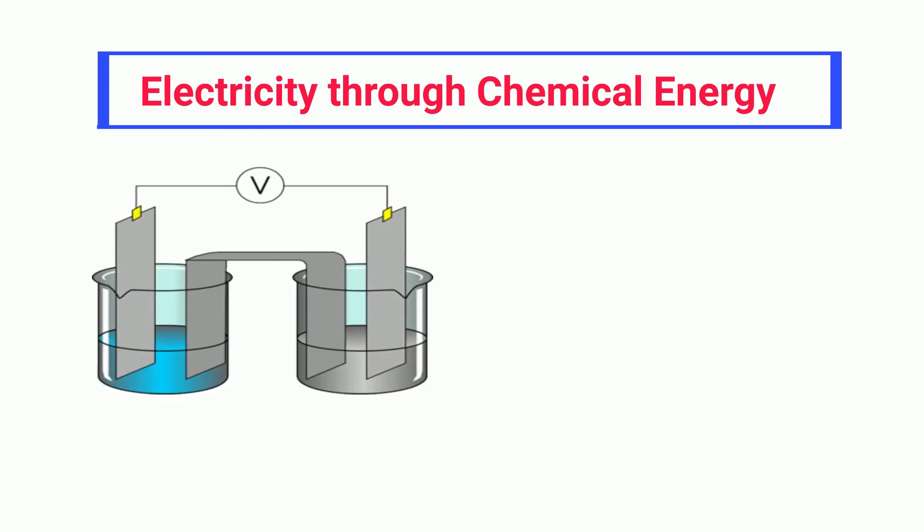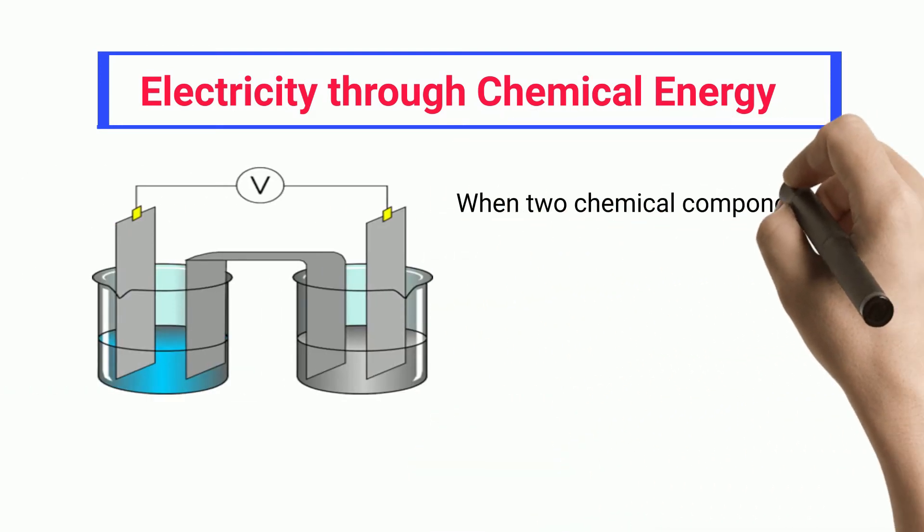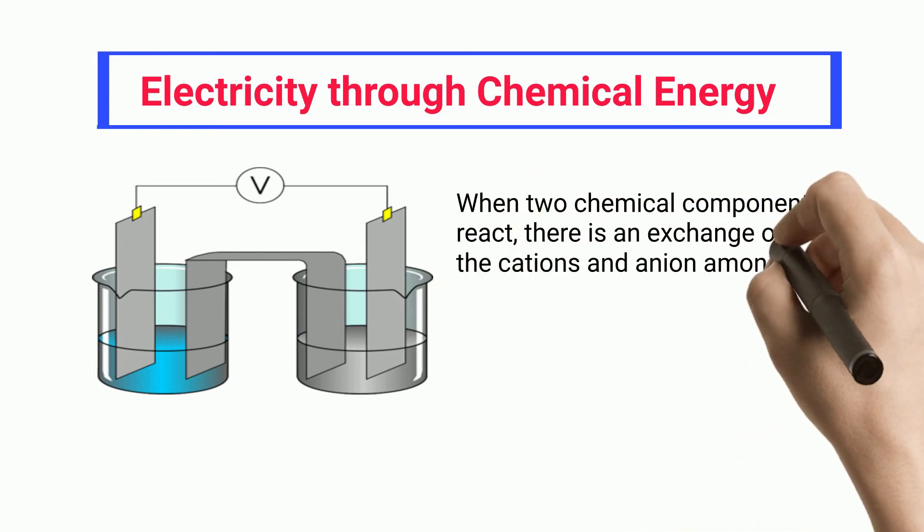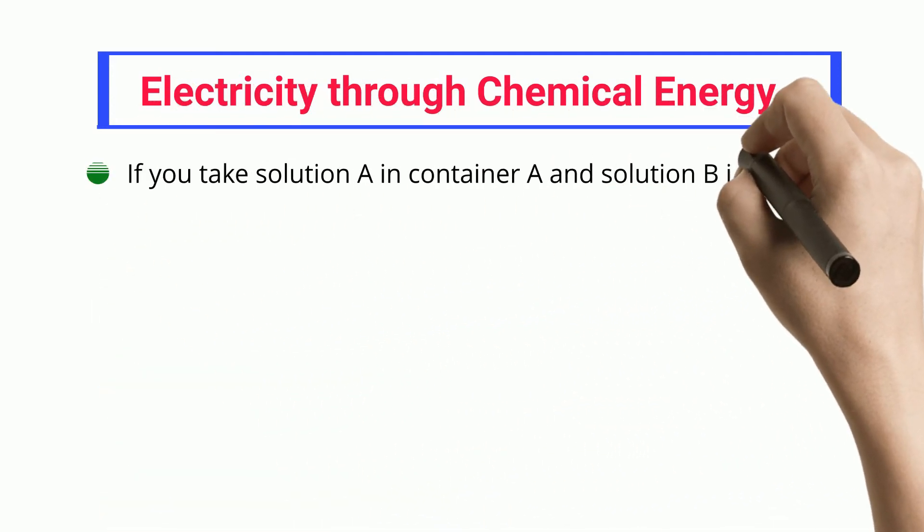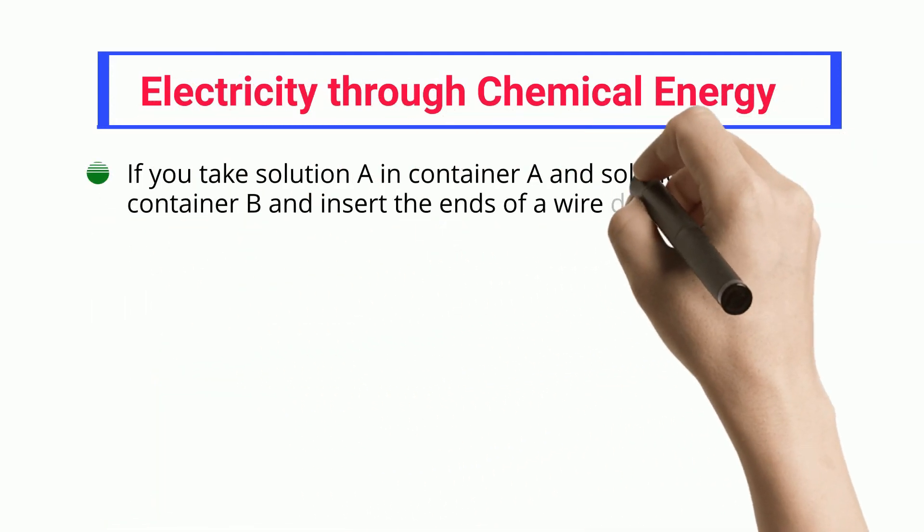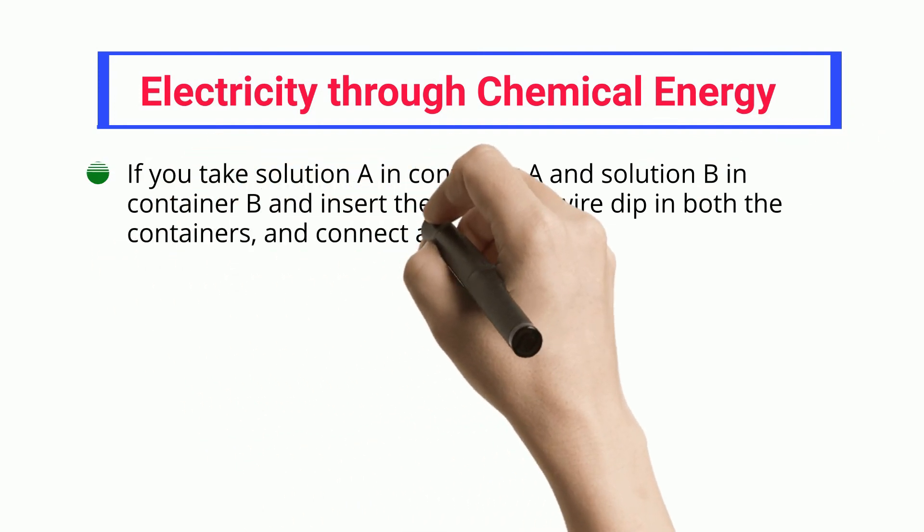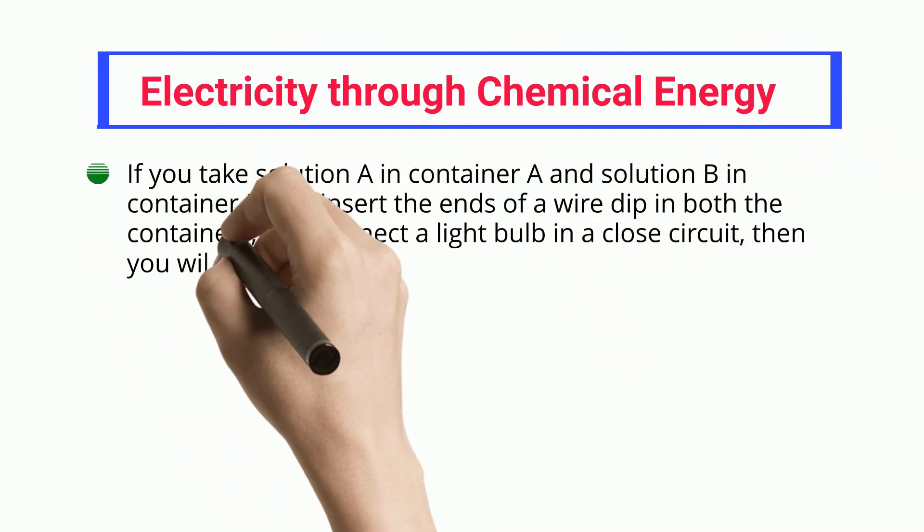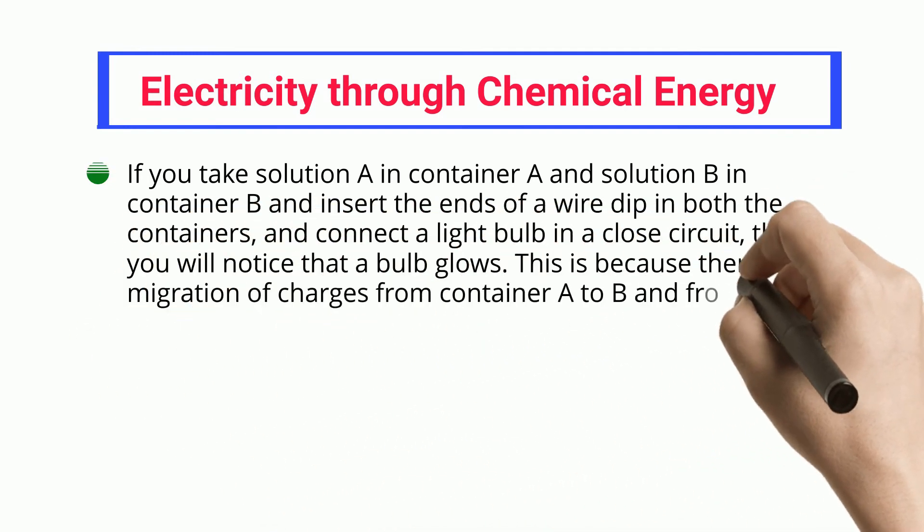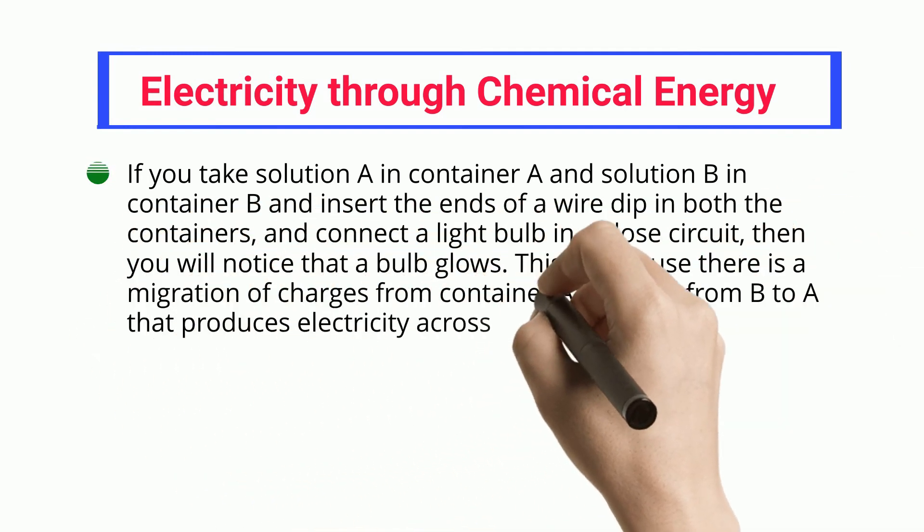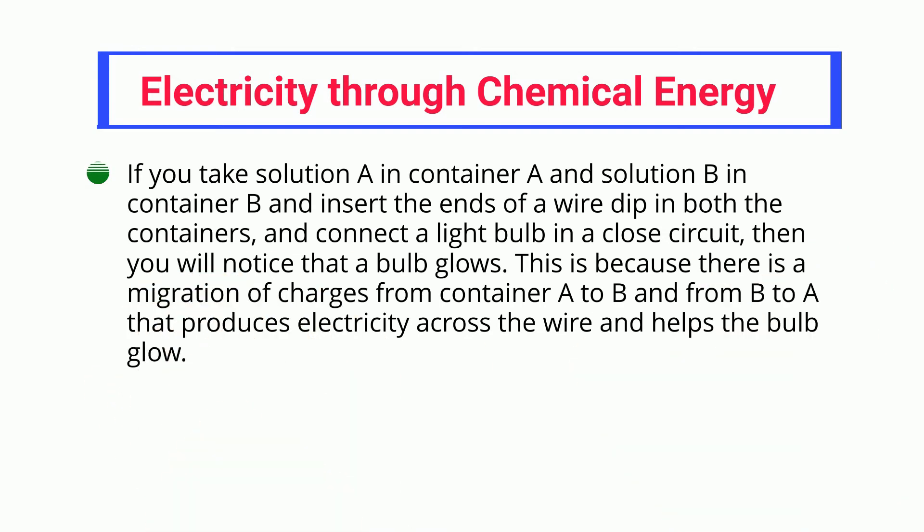Electricity Through Chemical Energy. When two chemical components react, there is an exchange of the cations and anions among each, releasing a huge amount of energy during the reaction. If you take solution A in container A and solution B in container B and insert the ends of a wire dip in both the containers and connect a light bulb in a closed circuit, then you will notice that a bulb glows. This is because there is a migration of charges from container A to B and from B to A that produces electricity across the wire and helps the bulb glow.